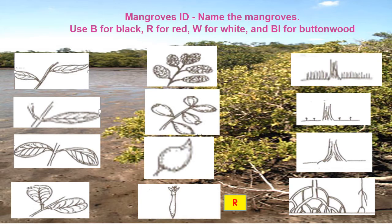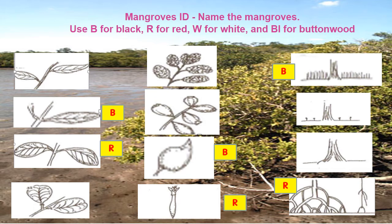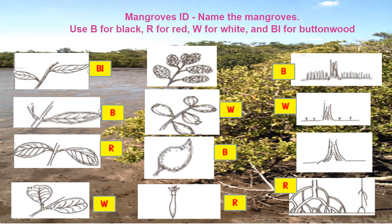That is the fruit of the red mangrove. The leaves of the red mangroves. That's the roots of the red mangroves. That's the leaves of the black mangroves. The fruit of the black mangrove. And the leaves of the black mangroves — great job! Now we're going to the white mangroves: the leaves, the fruit, and the roots. The only one we have left is the buttonwood: the leaves, the fruit, and the roots.